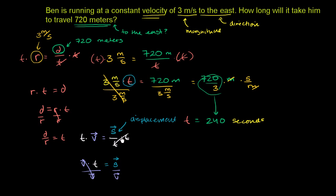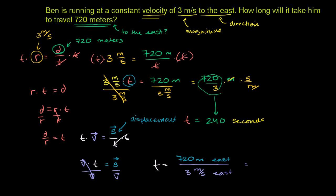720 divided by 3 gives 240. Meters in the numerator divided by meters per second in the denominator is the same as multiplying by seconds per meter — meters cancel — and you're just left with 240 seconds.